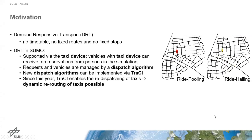DRT can already be simulated in SUMO via the taxi device. Vehicles with this device can receive trip reservations from persons in the simulation, which are managed by a dispatch algorithm. Some algorithms are ready with some dispatch algorithms, but for shared DRT services these have some limitations. New dispatch algorithms can be implemented via TRACY, and since this year, TRACY enables the redispatching of taxis, so dynamic rerouting of taxis is now possible.